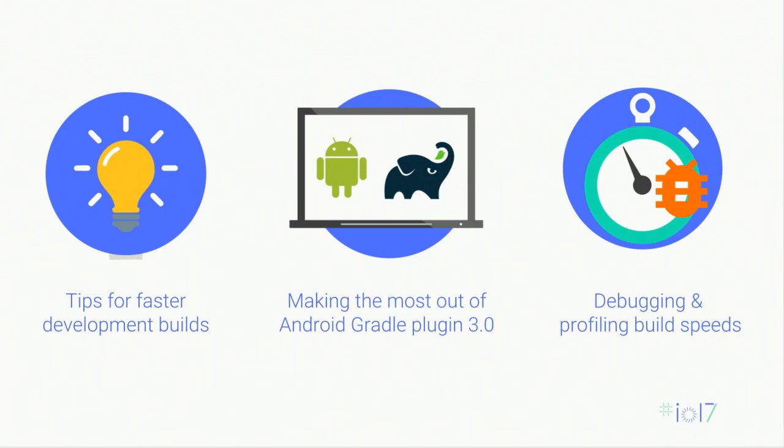Our talk today will be structured into three parts. First, I'm going to talk about tips for improving your project's development builds. Second, Jerome is going to talk about how you can make the most out of the new Android Gradle plugin 3.0 that we just released yesterday. And finally, he will wrap up by talking about tools and best practices on how to debug and profile your build performance issues. I'll present these tips one at a time using the Santa Tracker project as an example to show the impact of each tip, applying them one at a time to see how fast we can get the build.